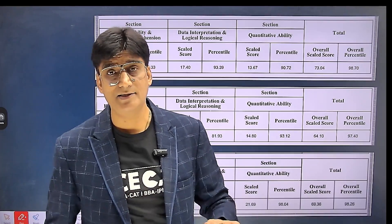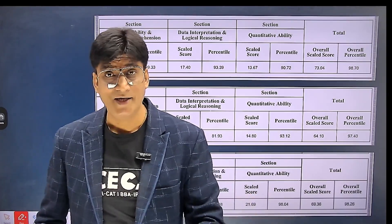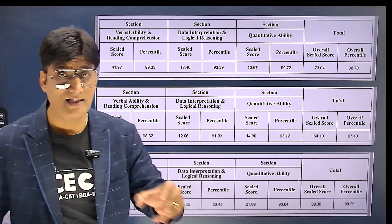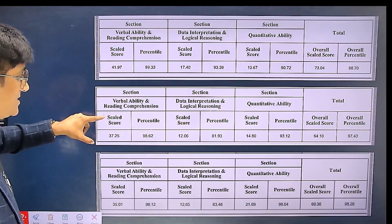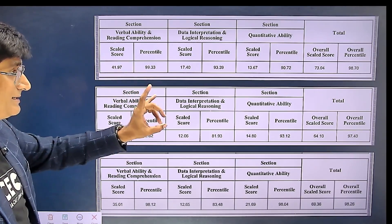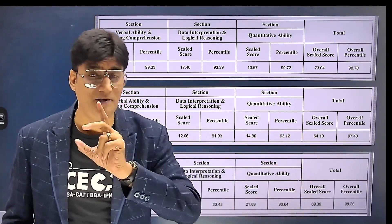We will discuss which particular section had scores scale up or scale down. As you see on the screen, these three scorecards are from three different slots. This is slot one, this is slot two, and this is slot three. I'll explain the raw scores for each section and the actual scores that came out.